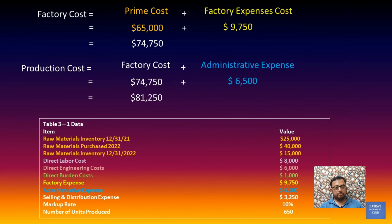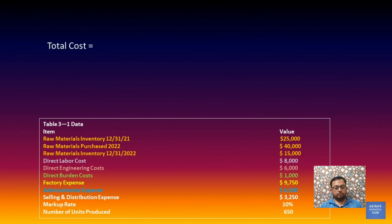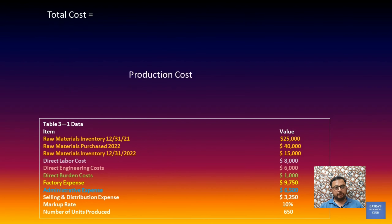Now we will calculate the total cost, which equals production cost plus selling expenses. The production cost we found is $81,250. Adding selling expenses of $3,250 from the question table, we get a total cost of $84,500.